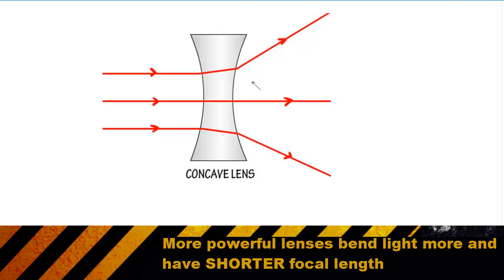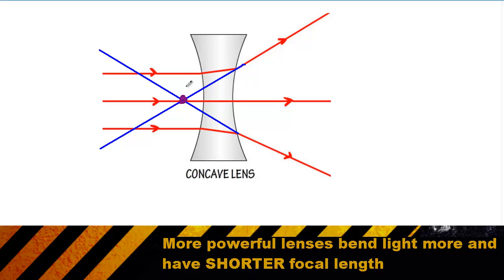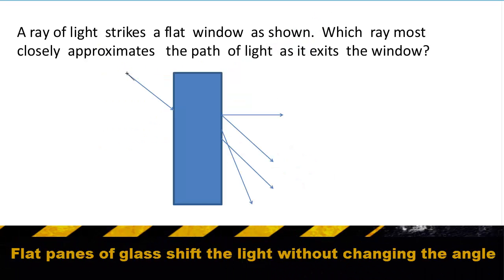Looking again at a diverging lens — also known as a concave lens — we see there isn't a traditional focal point where rays of light cross. But we still need a focal point to calculate the power of the lens, so we make up a virtual focal point. We draw our rays in reverse and find a spot where those imaginary lines cross. That point is our focal point, and the distance from that focal point to the lens is called our focal distance.